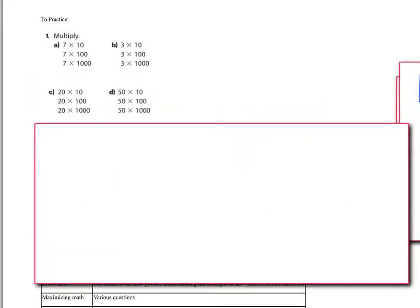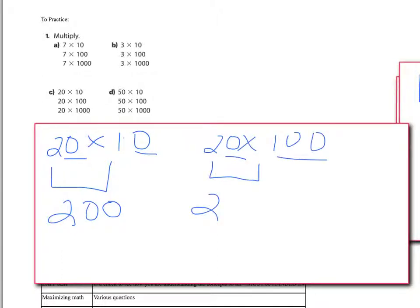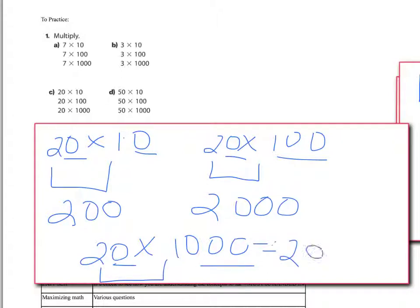How does this change when I have 2 numbers that have zeros in it? So 20 times 10. Well, 2 times 1 is still 2. How many zeros did I take off? I took off 2 of them. So I add 2 back on. 200. 20 times 100. 2 times 1 is 2. How many zeros did I take off? 3. I put 3 back on. 2,000. 20 times 1,000. 2 times 1 is 2. How many zeros did I take off? 4. How many do I add back on? 4. 20,000.